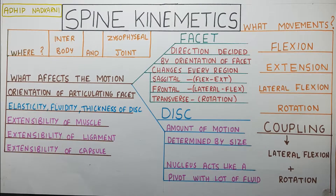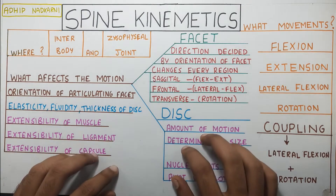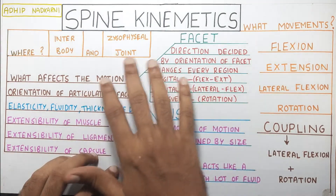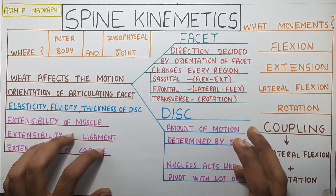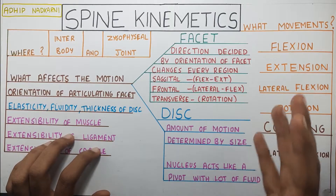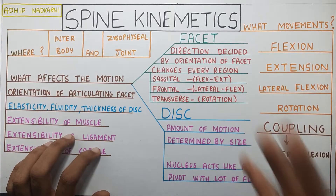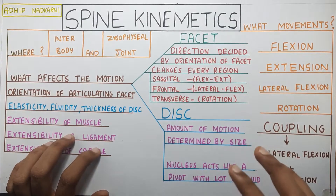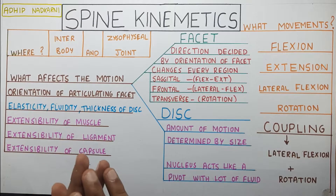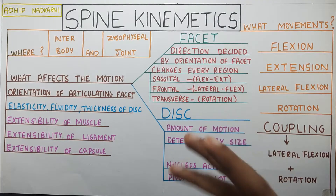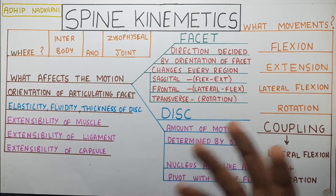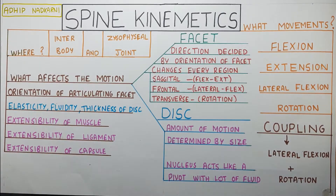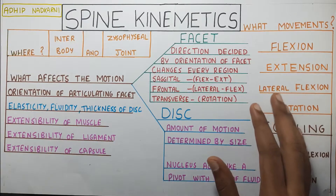In this video, we are going to talk about spine kinematics — that is, the movement around the spine. The last video was about the ligaments of the spine. This video will be focusing on what are the movements that occur at the joint, and then we will see what are the factors that affect the movement.